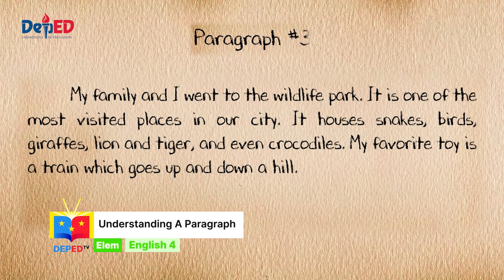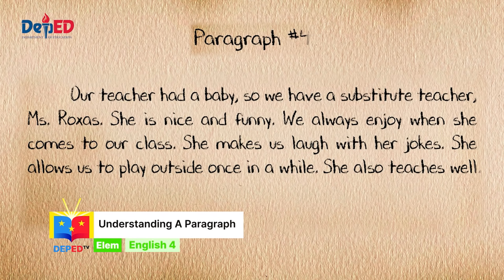Paragraph number three: My family and I went to the wildlife park. It is one of the most visited places in our city. It houses snakes, birds, lions and tigers, and even crocodiles. My favorite toy is a train which goes up and down a hill. And for the last paragraph, number four: Our teacher had a baby, so we have a substitute teacher, Miss Rojas. She is nice and funny. We always enjoy when she comes to our class. She makes us laugh with her jokes. She allows us to play outside once in a while. She also teaches well.